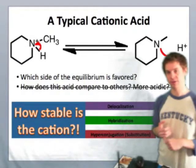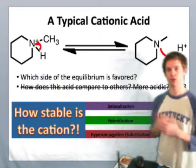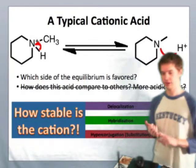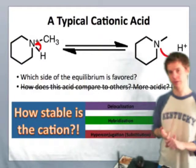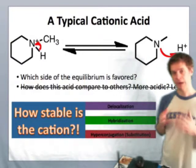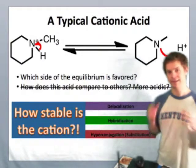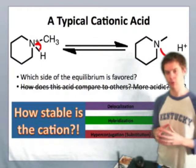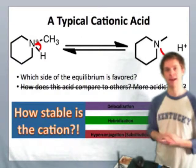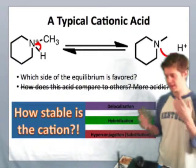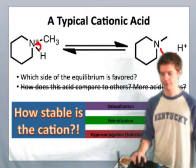And just like anions, there are actually four primary factors that control the stability of cations: hyperconjugation, hybridization, and delocalization. I'd like to look at these four factors in detail so that we can understand the factors that control cations and think about cations in the context of acidity and proton transfer.